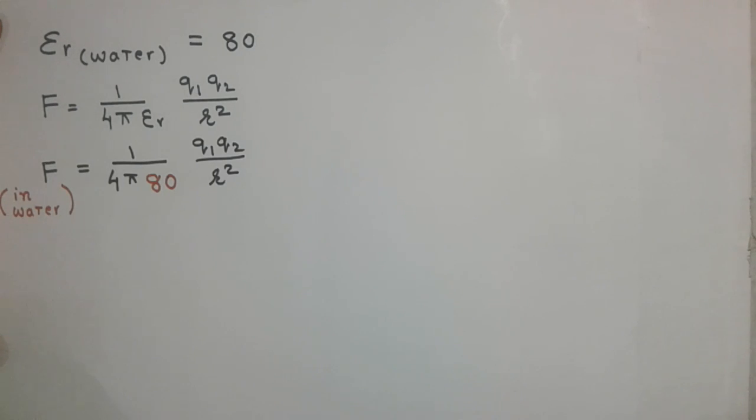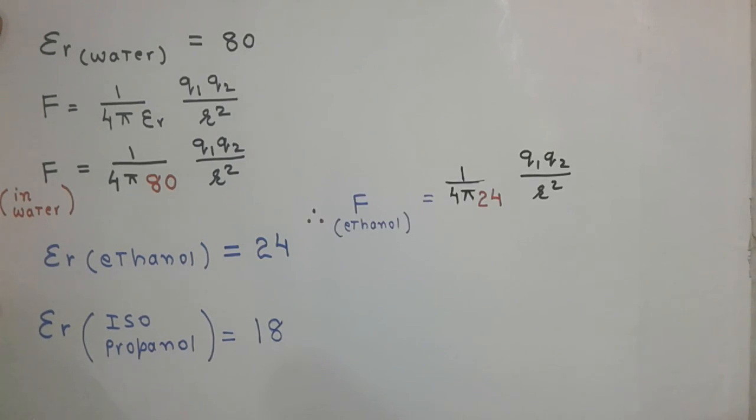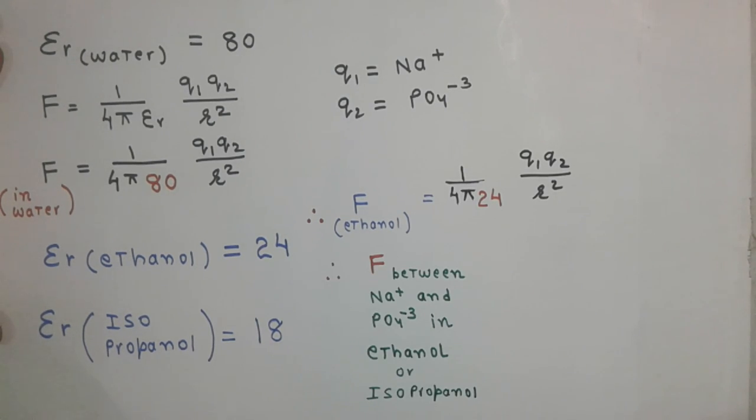However, solvents like ethanol have a dielectric constant of 24. Isopropyl alcohol has a dielectric constant of 18. So when these solvents are added, the force between the sodium ions and the negatively charged phosphate increases.